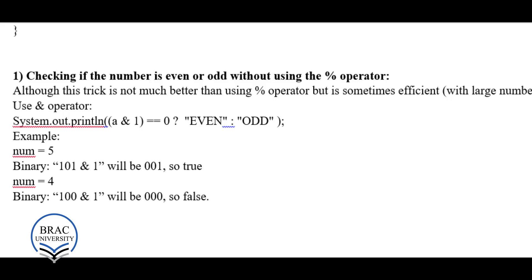Hello students, today we'll learn some tricks for programming contest problem solving. We'll start by checking if a number is even or odd without using the mod operator. Sometimes arithmetic operations are costly, so we use bitwise operations instead. In the case of the mod operation, it checks whether the remainder is 1 or 0. To understand this, let's convert some numbers to binary.